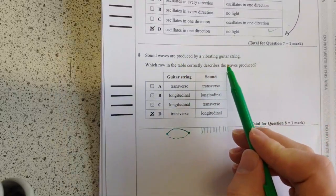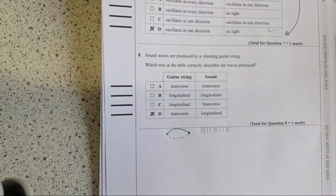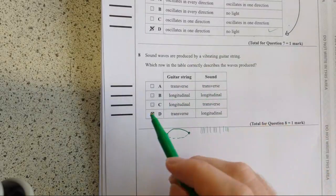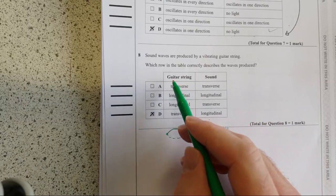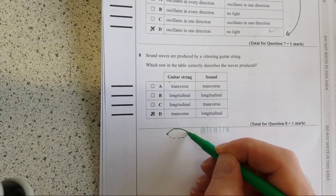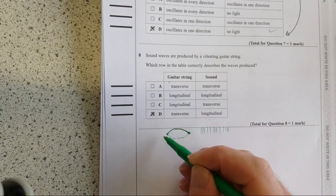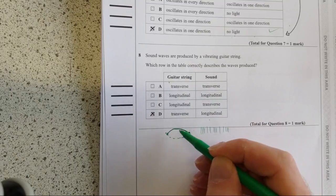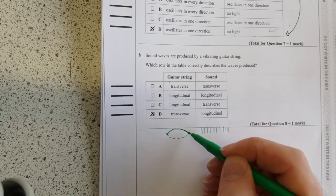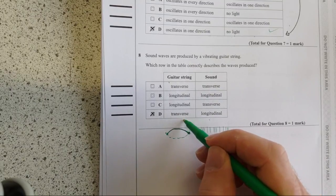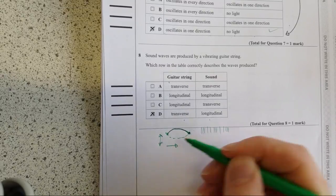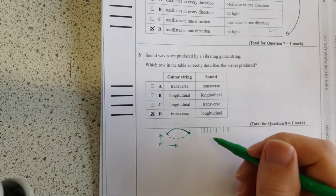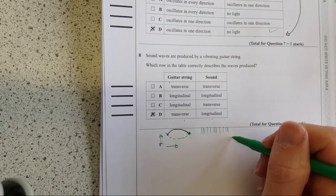Sound waves are produced by a vibrating guitar string. Which row in the table correctly describes the waves produced? This D is correct. Think about the guitar string. It is a one-long string, which acts as half the wavelength, so it oscillates up and down like this. That's why I've done this one dotted. That's a transverse wave, because the wave energy is this direction. The oscillation is in this direction. They're perpendicular to each other. And the sound waves, sound waves are pressure waves. They're longitudinal, so it's got to be D.